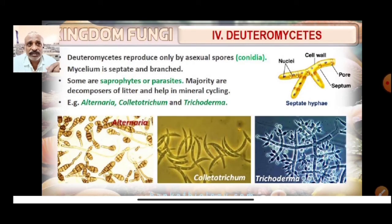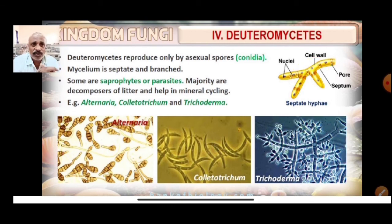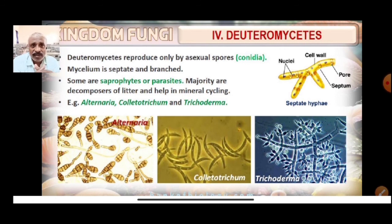It is also possible that the asexual and vegetative stage were given one name and placed under Deuteromycetes, while the sexual stage was given another name under a different class. When linkages were established, the fungi were correctly identified and moved out of Deuteromycetes. Deuteromycetes reproduce only by asexual spores called conidia. The mycelium is septate and branched. Some are parasitic and some are saprophytes.